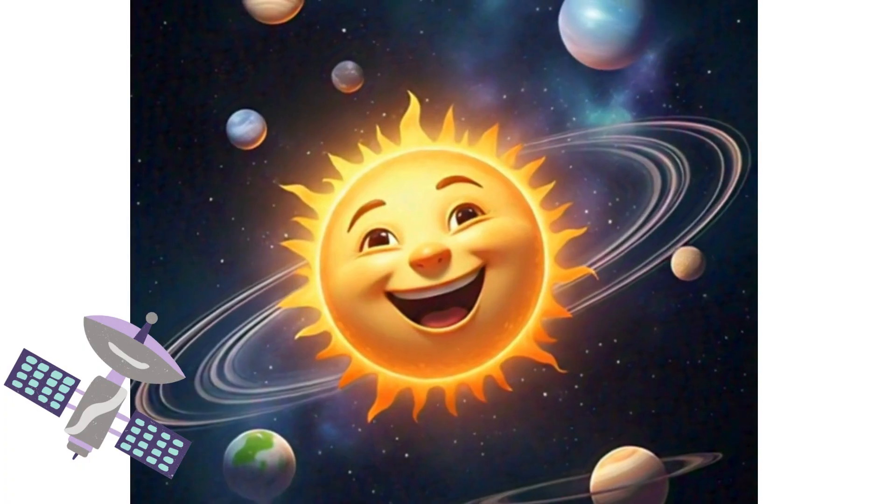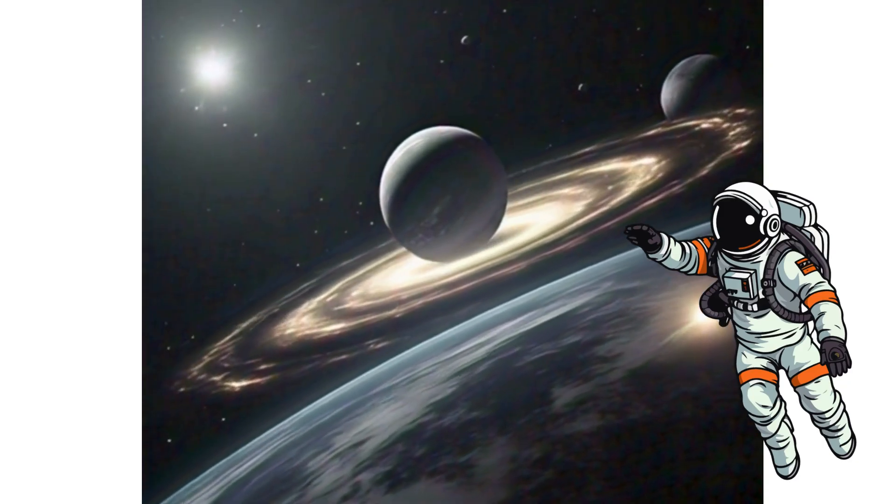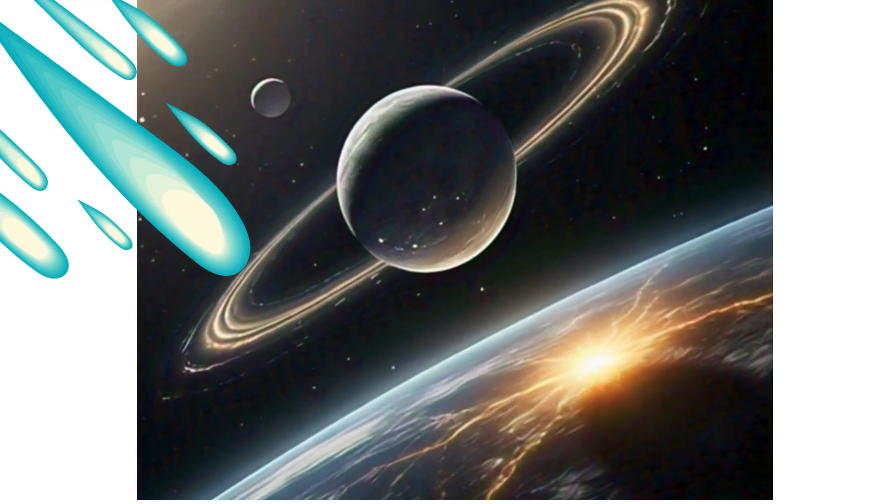First is Mercury, small and fast. It zips around the sun so fast. Next is Venus, hot and bright, with golden clouds that shine so white.